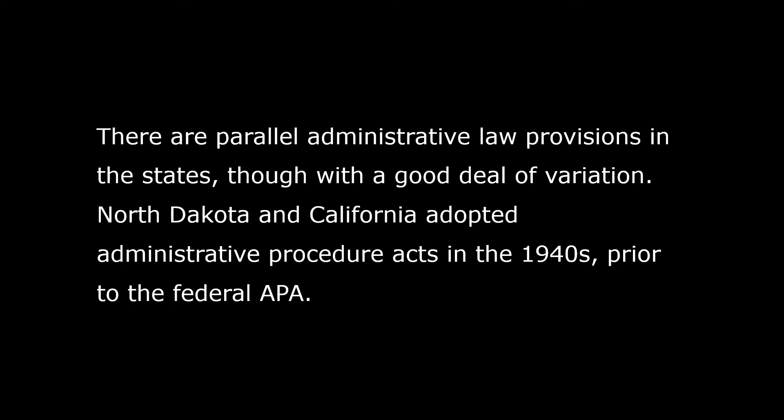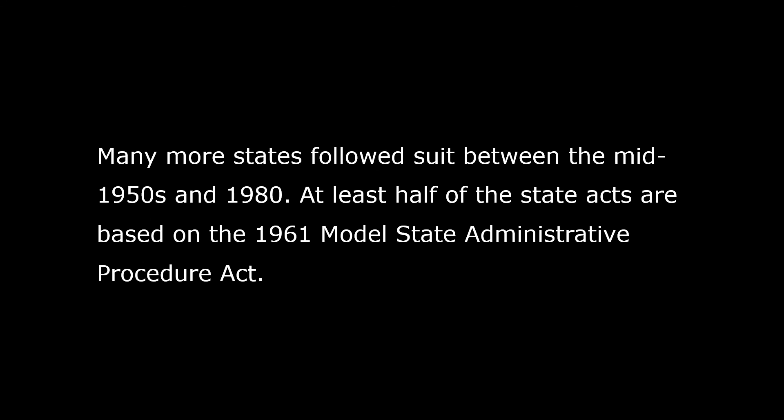North Dakota and California adopted Administrative Procedure Acts in the 1940s, prior to the federal APA. Many more states followed suit between the mid-1950s and 1980s. At least half of the states' acts are based on the 1961 Model State Administrative Procedures Act. Some include provisions incorporated into the Model State Administrative Procedures Act of 1981, which placed more emphasis on protecting individual rights against administrative abuse. The state APAs typically apply to state agencies, but not to local governments.